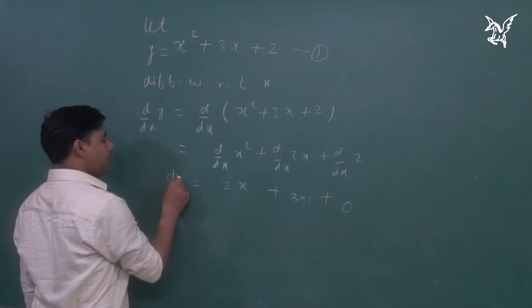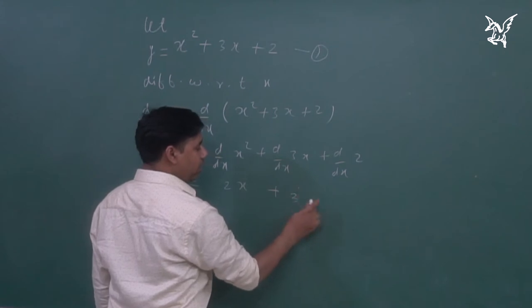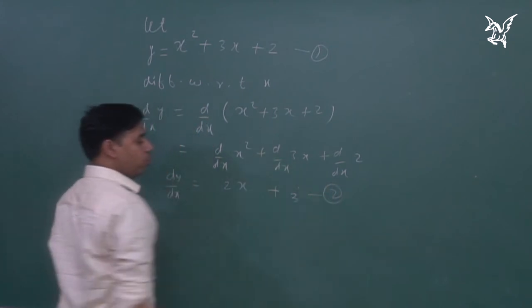So, here we have to write dy by dx. Let's add this. What will happen? 2x plus 3. So, that is equation number 2.